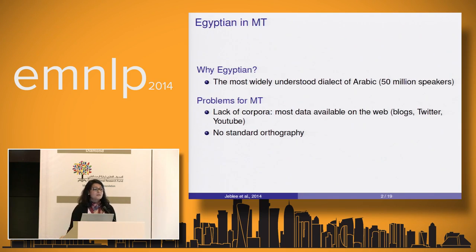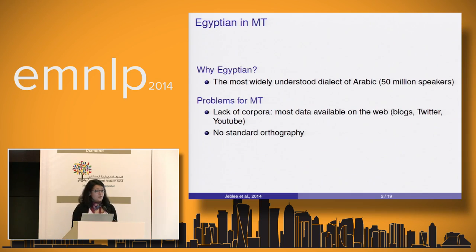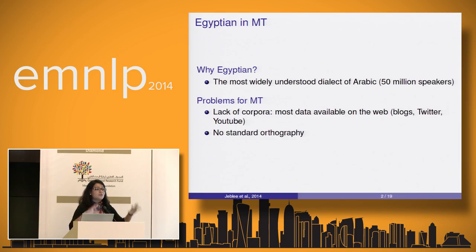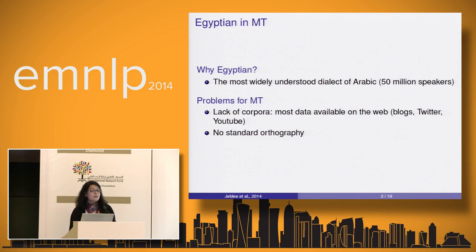The problem is that to build any MT system we need data — parallel data, in our case English into Egyptian. Although there is a lot of attention now on dialects and creating resources and corpora, we still lack the right corpora to build a perfect machine translation system. Most available data are on the web and don't have standard orthography, among other issues we've been discussing.